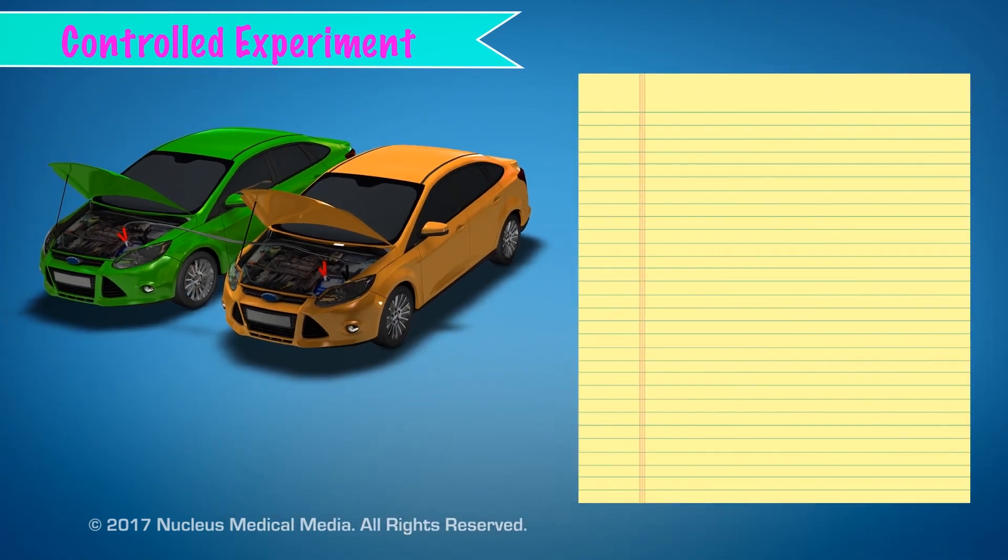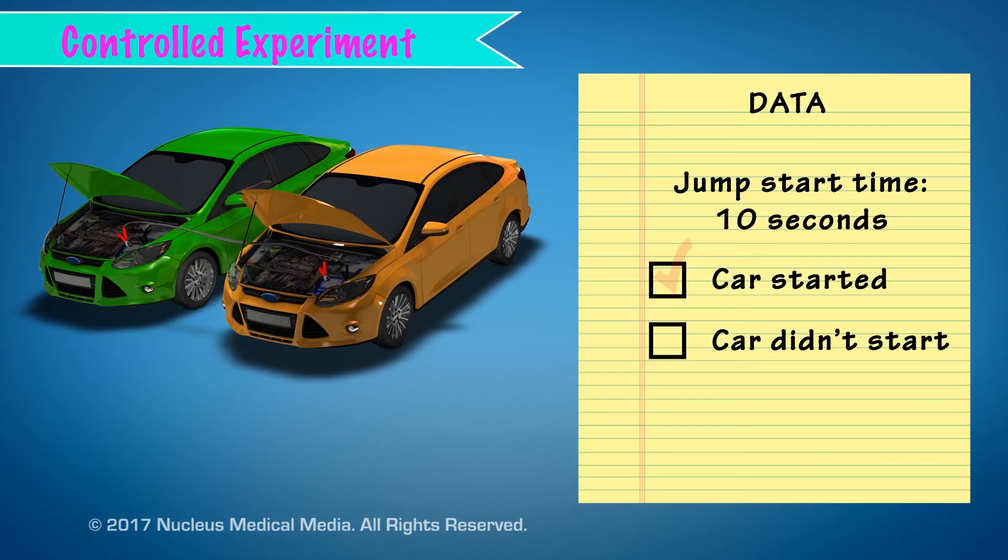In an actual experiment, you would record any data that results, such as how long you tried to jumpstart the battery and whether or not the car started. We'll cover more details on controlled experiments and types of data in separate videos.